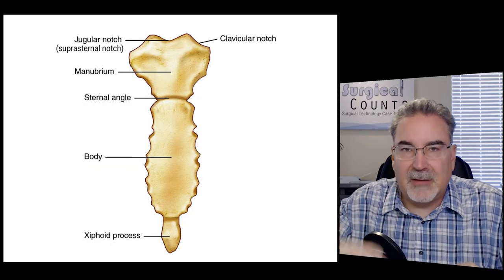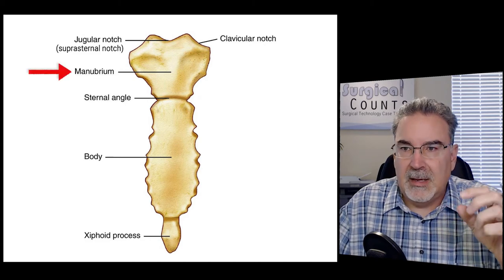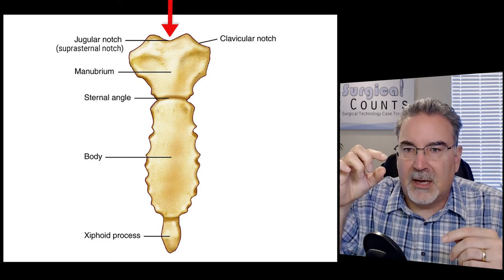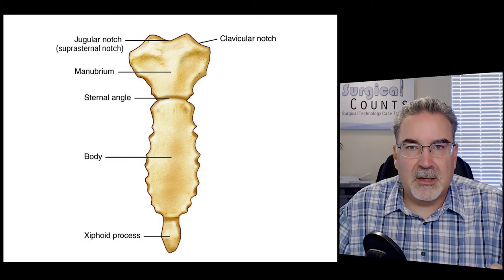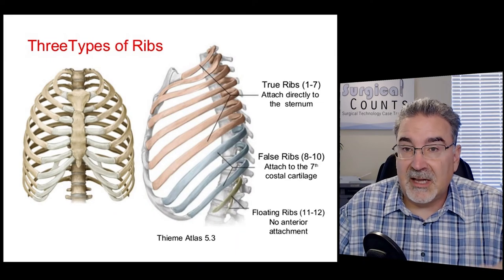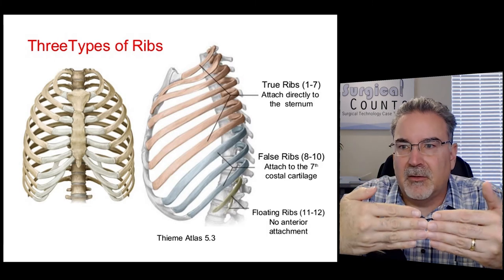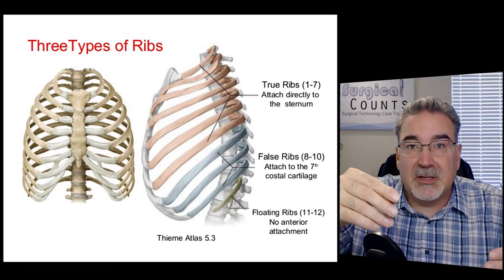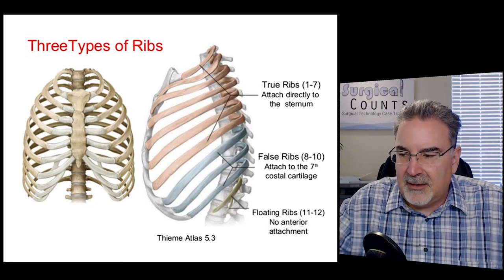Where the ribs come together at the center of the chest, we have the sternum, which is divided into three parts. The top part is the manubrium, which has clavicular notches on each side where the clavicle attaches, and a jugular notch or suprasternal notch at the top. The body of the sternum is the main portion in the middle. Down at the bottom is the xiphoid process — that's the point you're feeling for during CPR chest compressions. There are three types of ribs: the first seven are true ribs connecting directly to the sternum; ribs 8, 9, and 10 are false ribs connecting via cartilage; and ribs 11 and 12 are floating ribs that don't connect to anything.